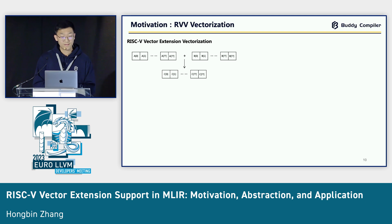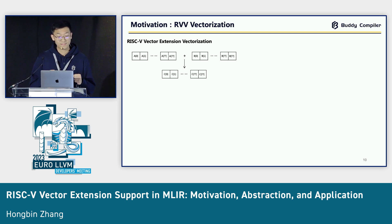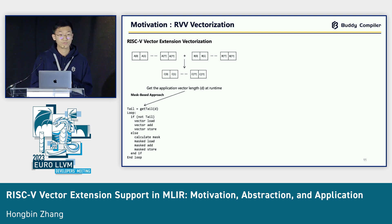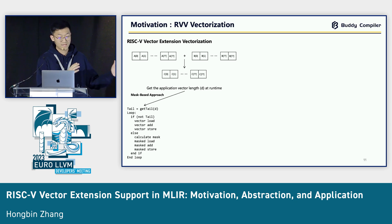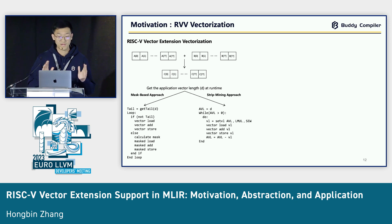Let's look at an application scenario. Assuming we want to add two vectors together and we don't know the length of this vector at compile time — it is a runtime value. There are two approaches to achieve this. The first is the mask-based approach, where when we meet the tail we use mask operations to conduct tail processing. This mask-based approach can be perfectly implemented in MLIR. On the RVV side, we have another strategy called the strip-mining approach, and in this approach we meet the limitation of MLIR.